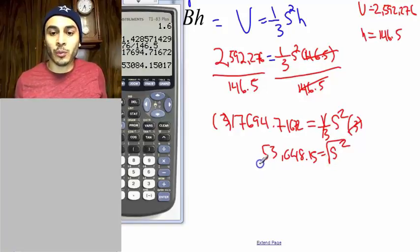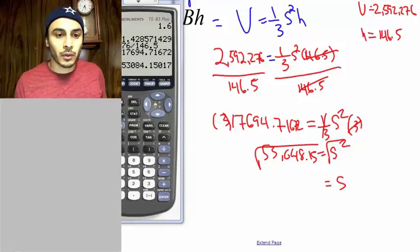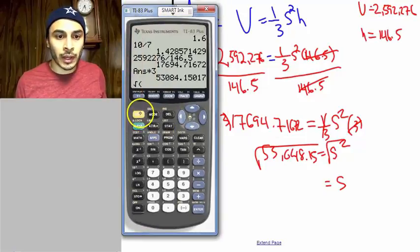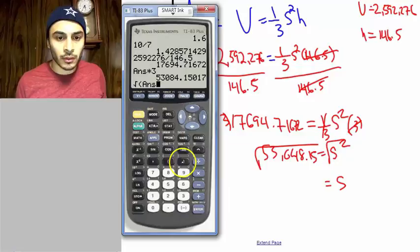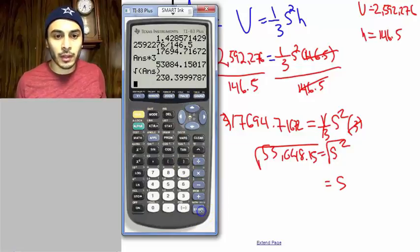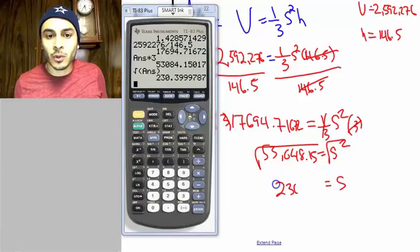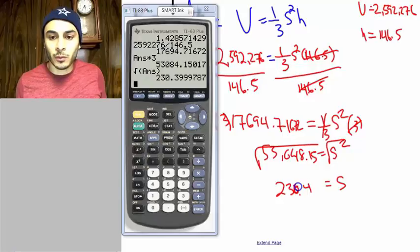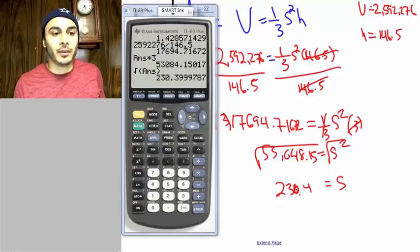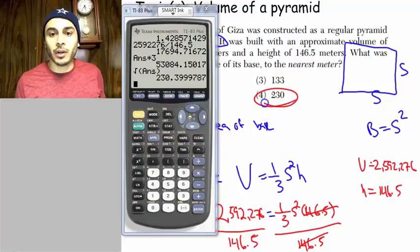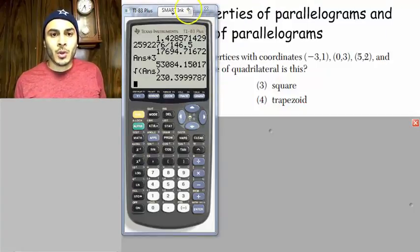So that was 53,084.15 equals the side squared. And so then now I have to square root both sides. So it's going to be the square root of that number. So I could just do second answer, the square root of the previous answer, and then I should get my answer there. So it's about 230.4. We'll round it to the nearest tenth. All right, so it's about 230.